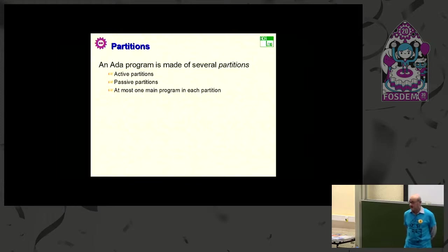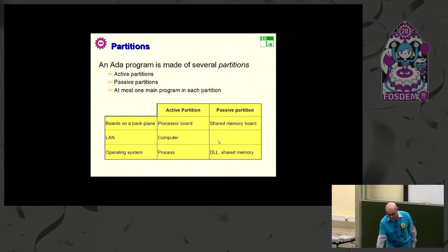You run them together, and together they build the whole program. You have active partitions that can run any program. Also, passive partitions that can contain code and data, but no task, nothing that's active. You can even have several main programs. The language requires only at least one main program in one of the partitions. But you may have several main programs, including one in each partition.